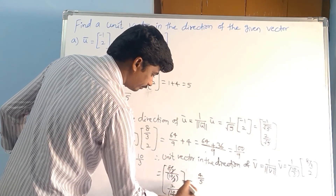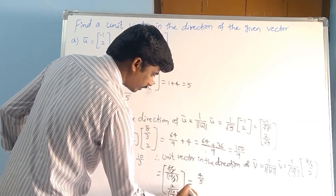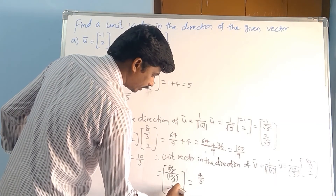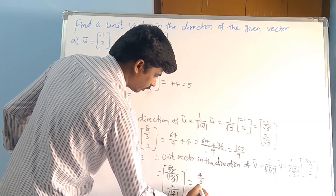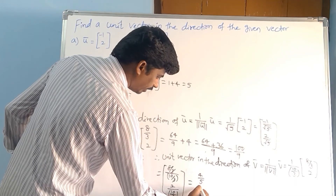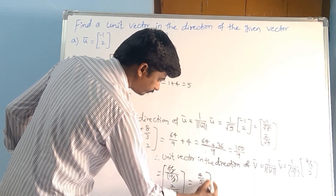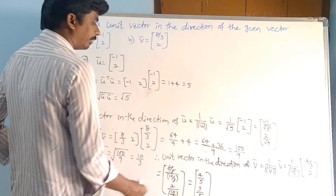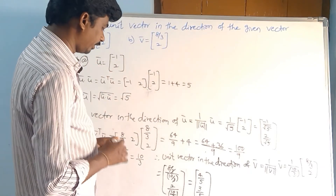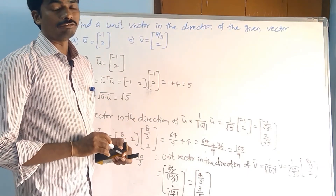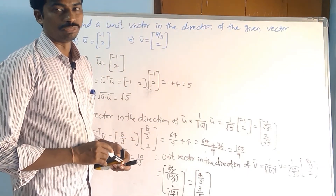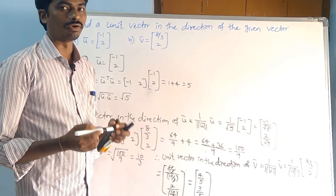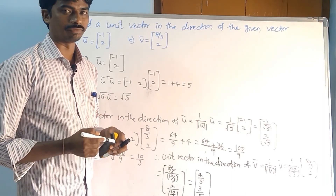Where the 3s cancel, we get 4/5 for the first component. And 6/10 equals 3/5 for the second component. So the unit vector in the direction of v̅ is (4/5, 3/5). Do you have any doubt? Please comment. Please subscribe to my channel, don't forget to like and share. Thank you.